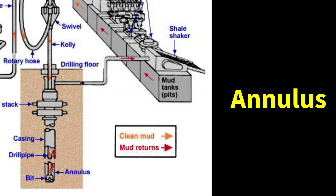The flow line is a pipe that connects the annulus with the shale shakers. It is where the drilling fluid exits from the wellbore at surface.